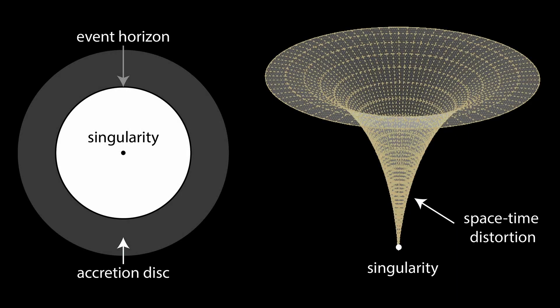A black hole is a region of space-time where gravity is so strong that nothing, no particles or even electromagnetic radiation such as light can escape from it. Around a black hole, there is a boundary called the event horizon, beyond which there is no way back.